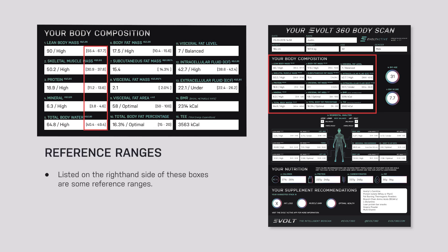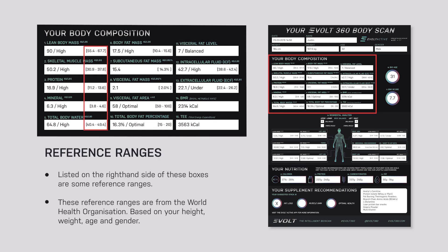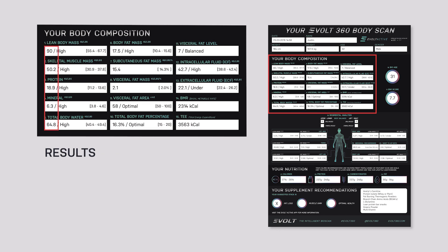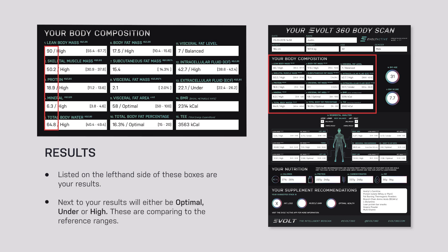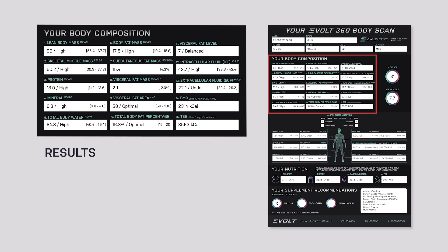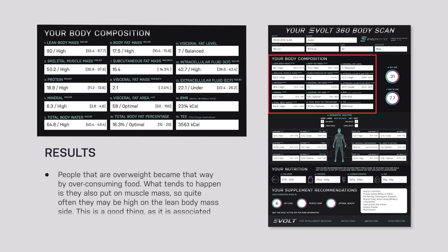On the right-hand side of all these boxes we have reference ranges from the World Health Organization based on someone your height, age and gender — that's how the Evolt is more specific to you. Your result is on the left-hand side, and then you'll have either optimal, under, or high displayed, comparing your result to those reference ranges.